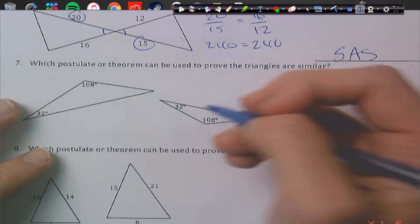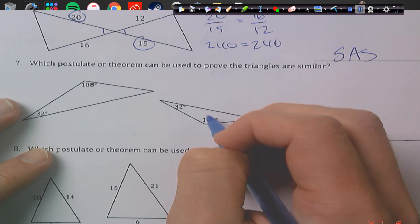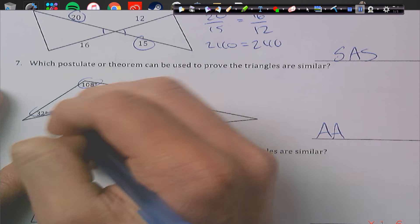This one's pretty easy. We have two angles. It's just angle, angle, similarity. They're congruent.